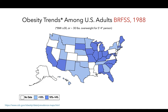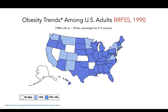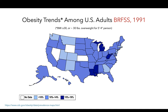In 1988 we see more data as well as more darker blue states. 1989 shows a similar trend, as well as 1990. And in 1991 we have a whole new classification, with some states reporting 15 to 19% of adults with a BMI classified as obese.